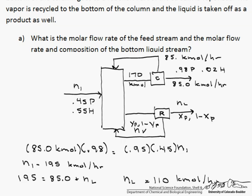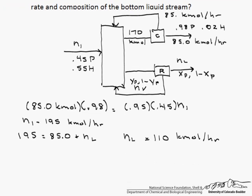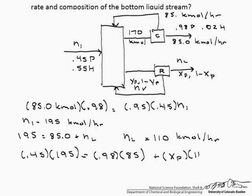To find the x sub p, we could either do a pentane balance or a hexane balance, but let's do a pentane balance, since we have x sub p there. So 0.45 times n1, which is 195 kilomoles per hour, equals 0.98 times 85 kilomoles per hour, that is what is leaving up at the top, plus our x sub p times our n sub l, which is 110 kilomoles per hour. And when we solve for x sub p, we find that it is 0.0409.